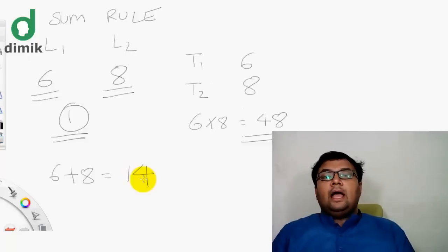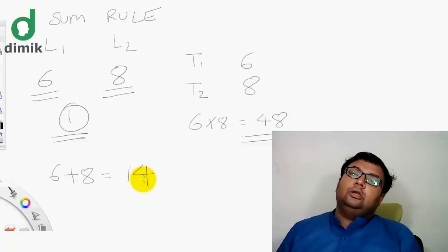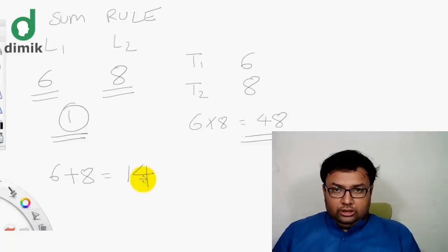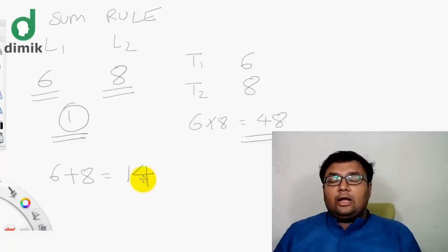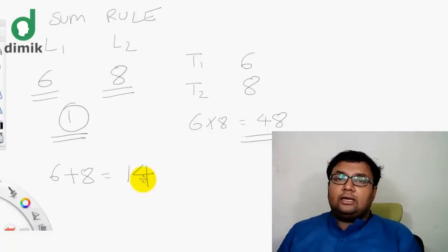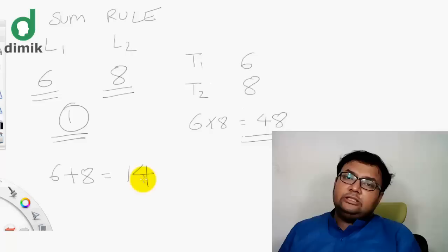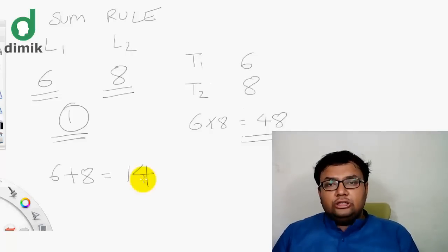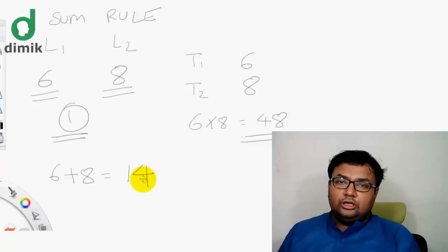This is obvious. The product rule and sum rule are related to the type of topic. The first option is 6 and the second option is 8.